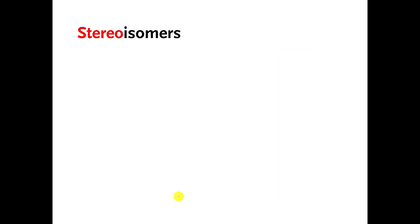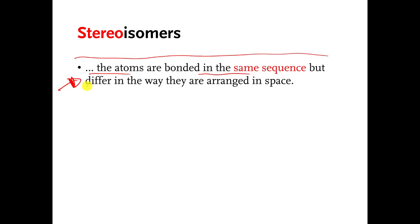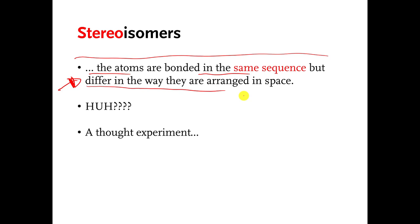It is called a stereoisomer. Here is a definition I took from an old version of your book: stereoisomers are molecules where the atoms are bonded in the same sequence, but differ in the way they are arranged in space. That doesn't make any sense to me, and it may not make any sense to you. So to explain what a stereoisomer is, I have a thought exercise.